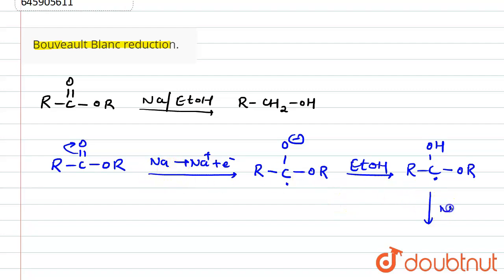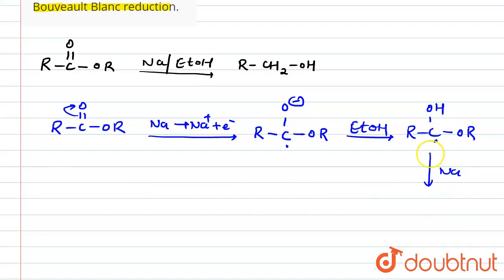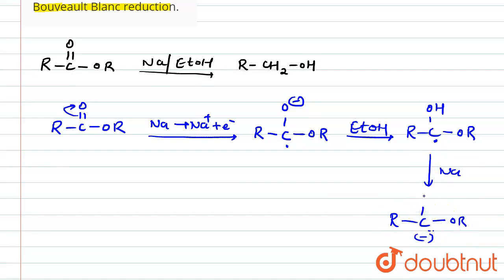From sodium, another mole of sodium is taken — another electron comes and that electron combines with the radical to convert it into a carbanion (negative charge). Now we have the OR group and the OH group present in the intermediate.